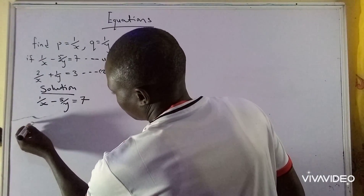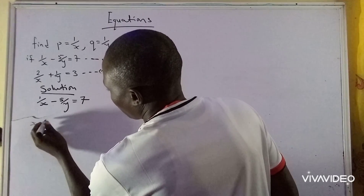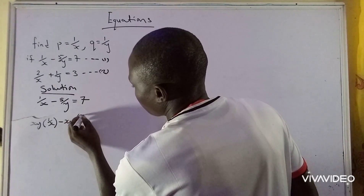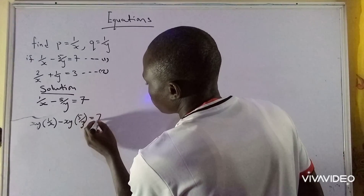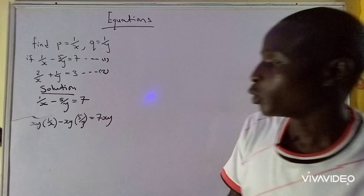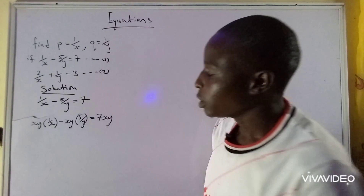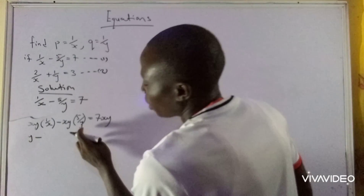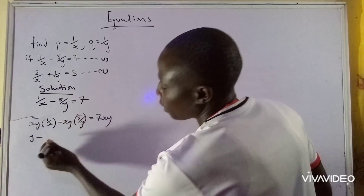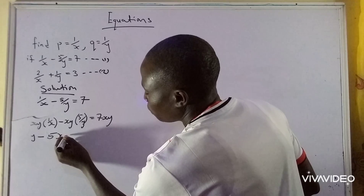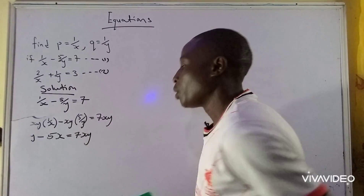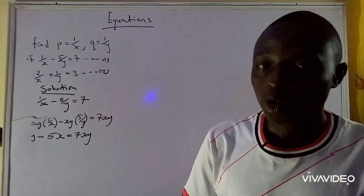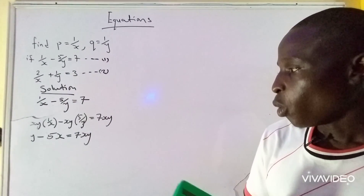Multiplying all three terms, we have: XY times (1 over X) minus XY times (5 over Y) equals 7XY. This X will cancel this X, leaving Y. Y times 1 is Y. Then Y will cancel this Y, leaving X. X times 5 is 5X. So we have Y minus 5X equals 7XY.